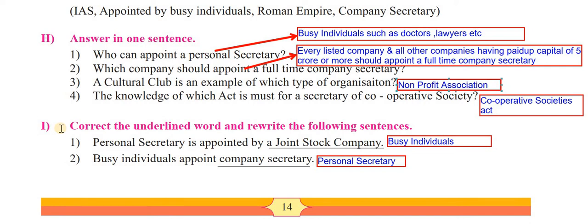Next is the second one: busy individuals appoint company secretary - which is completely wrong. You can see they have framed it in such a way - using the answer from the first question as the starting point. Busy individuals appoint personal secretary, not company secretary. So you will rewrite it: busy individuals appoint personal secretary.